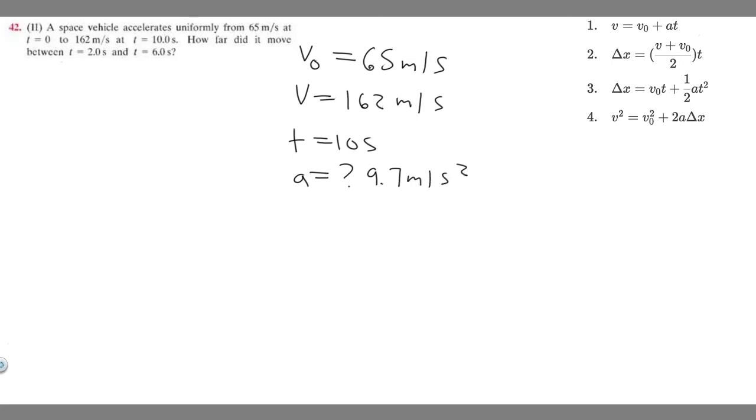To find delta x we're going to use formula number three. The reason we're using that is because the first one doesn't have delta x. We're using this one because we need time, this one doesn't have it, and this one doesn't have acceleration. So we're using the third one because it contains the variables we actually have.